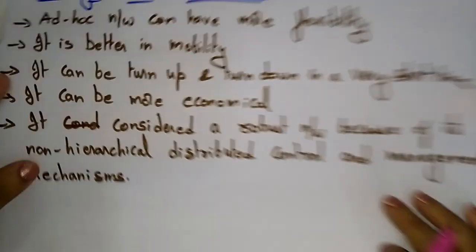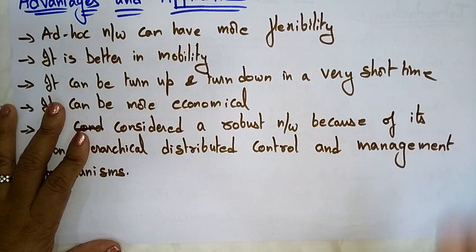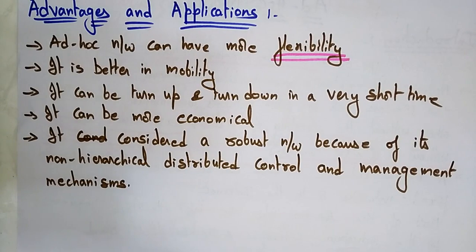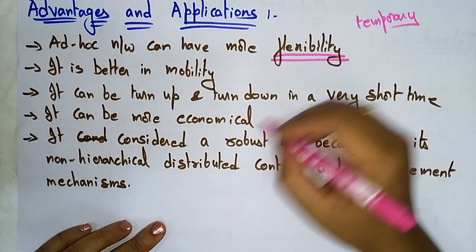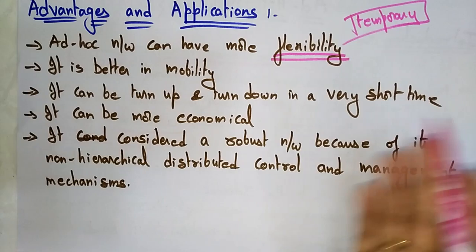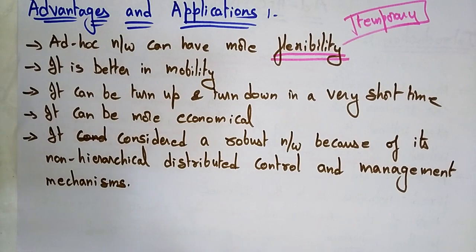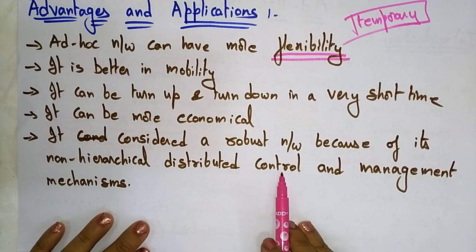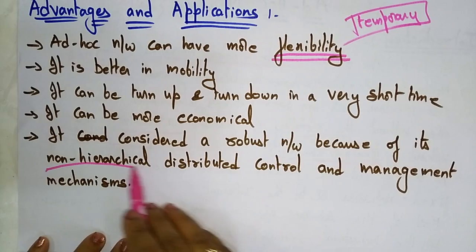Now let's see the advantages of ad hoc networks. Ad hoc networks have more flexibility because they are temporary — you can add or remove devices as needed. They offer better mobility with easy placement and removal, and can be turned up or down in a very short time. They are more economical and considered robust networks because of their non-hierarchical distributed control and management mechanism.